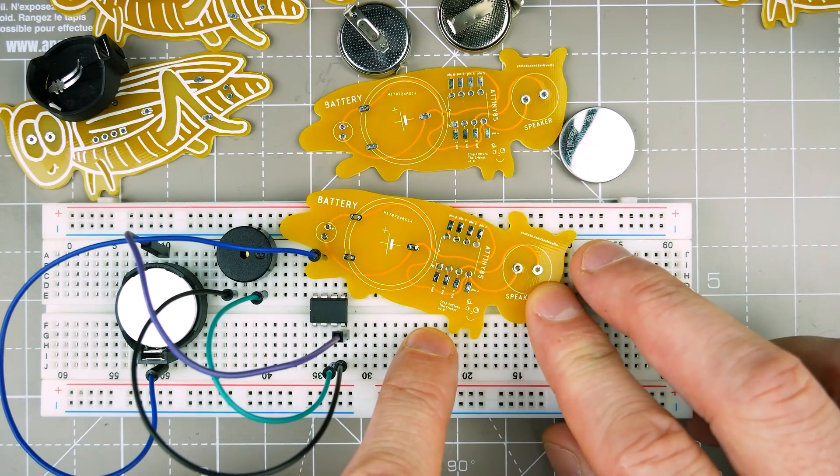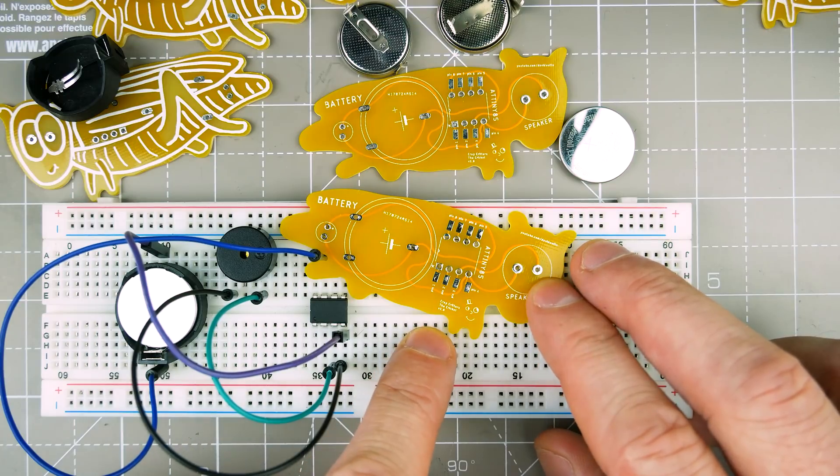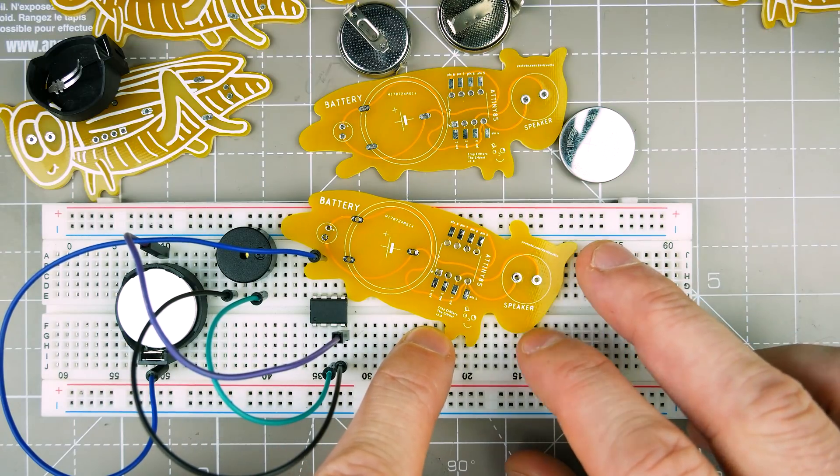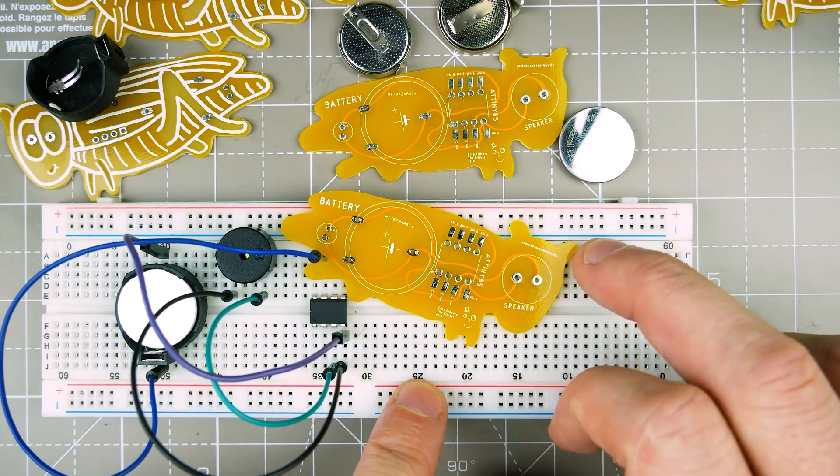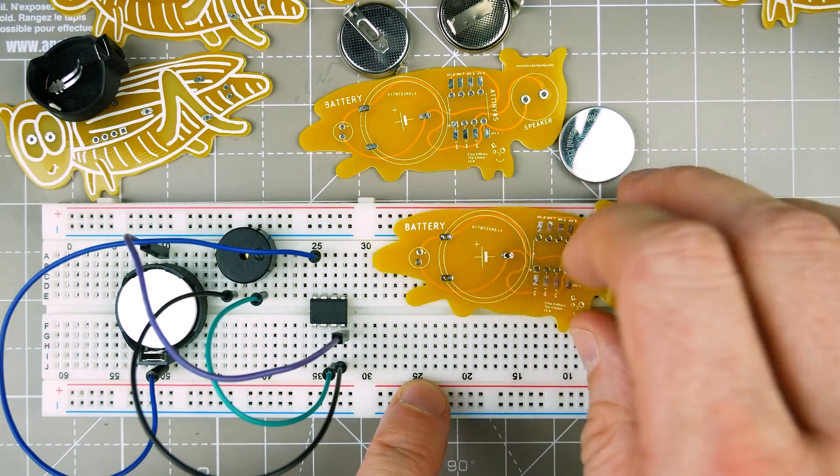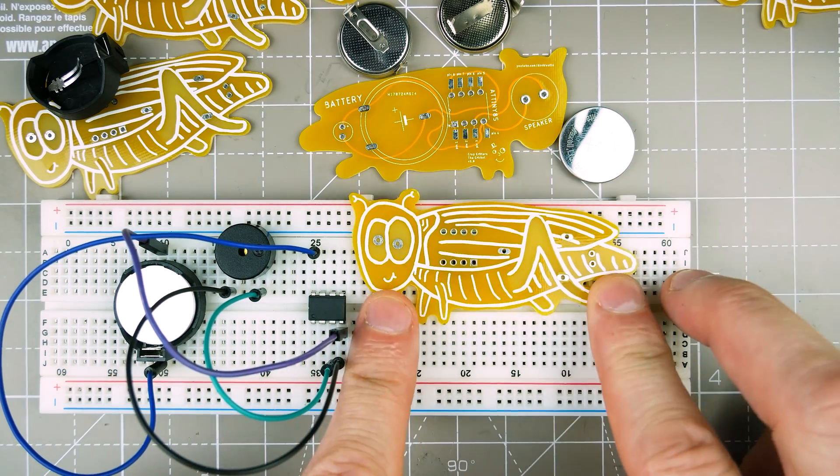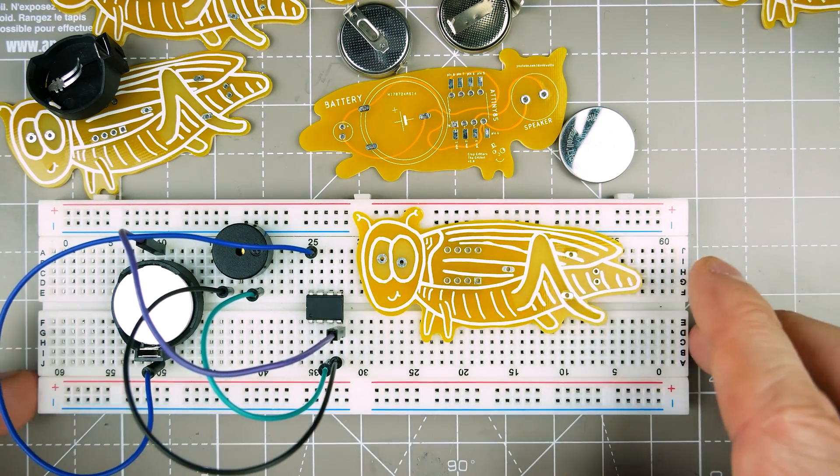What I've done is broken out the pads on this so you can reprogram it if you want to or repurpose the board for something else. Essentially it's just a carrier for the ATtiny85, a speaker and a battery with a stupid little design on the front. Let's solder one up shall we.